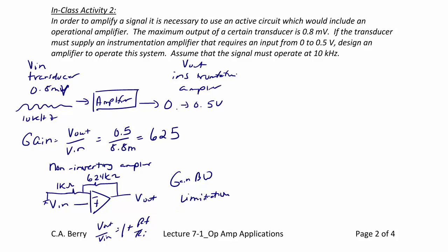All op amps have a gain bandwidth limitation, meaning that as frequency increases, the gain rolls off. For example, if this op amp has a gain bandwidth product of 10,000, the gain rolls off to a maximum of only 100 at 10 hertz, meaning you cannot have an input signal at 10 kilohertz and still get a gain of 625. The way to get around this is to maximize the gain at the operating frequency by cascading op amps with a lower gain, so you don't reach the point where gain rolls off at higher frequencies.